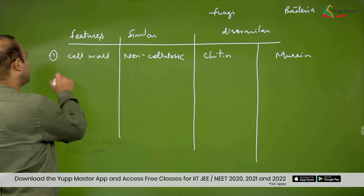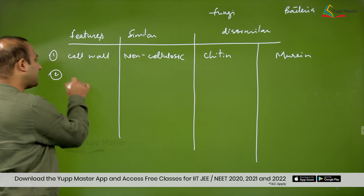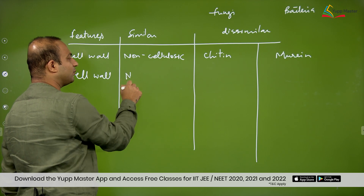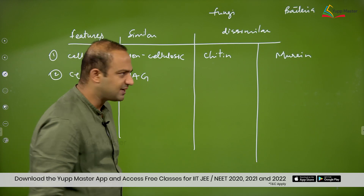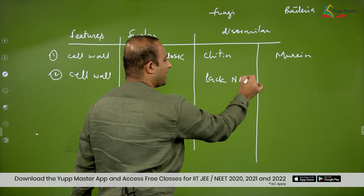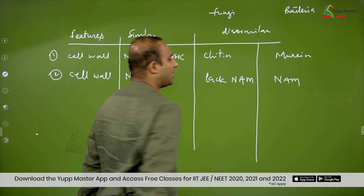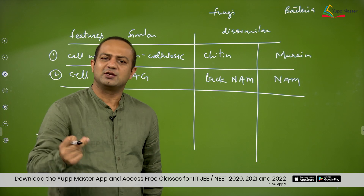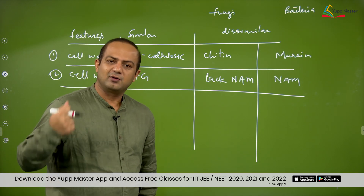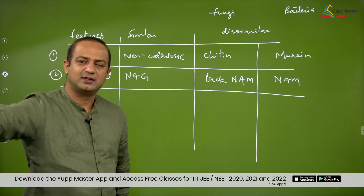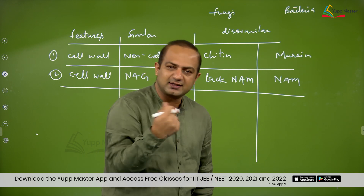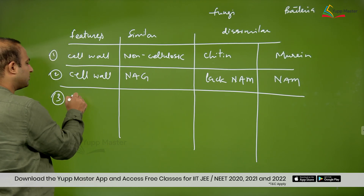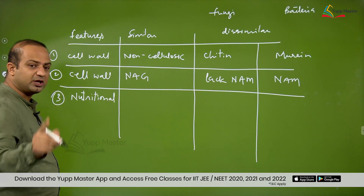The dissimilarity: fungi have chitin and bacteria usually have murein or peptidoglycan. Going one step beyond the NCERT for the cell wall: the similar condition is that NAG is same in both. However, fungi lack NAM, whereas bacteria have both NAG and NAM. See — it is easy, it is not difficult. When you are doing this your energy increases and your brain is going to work faster.